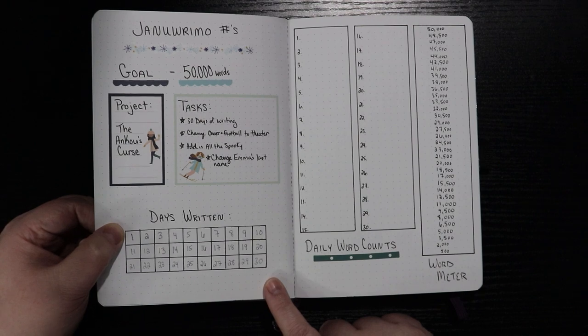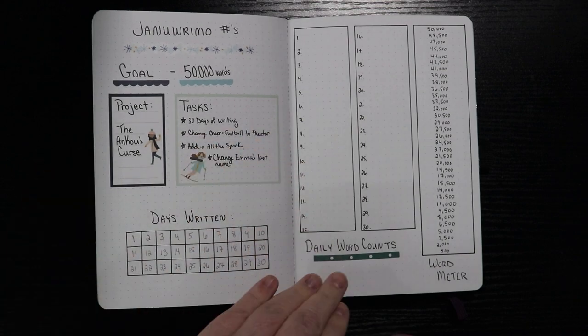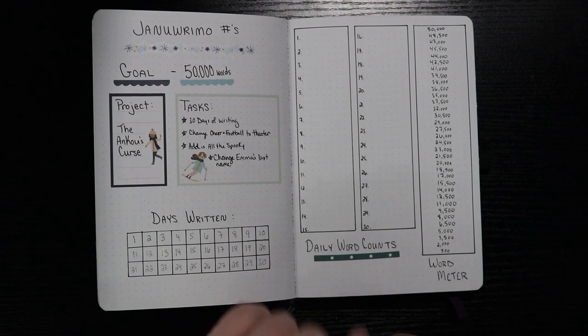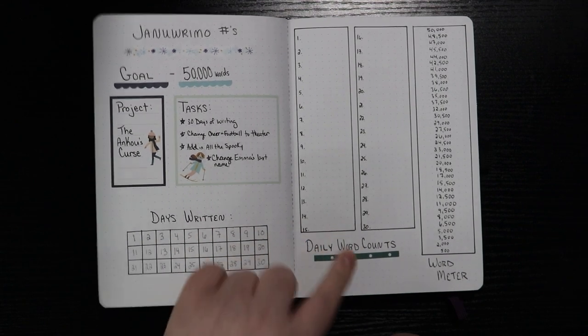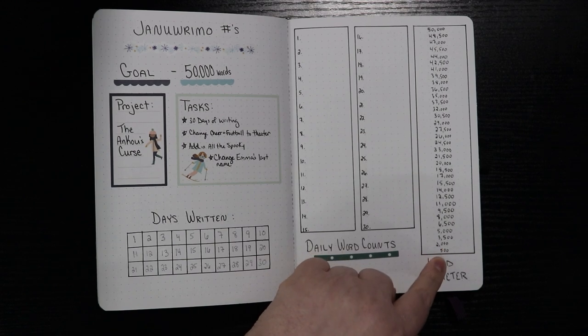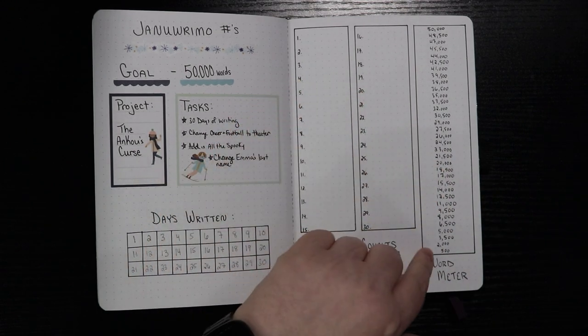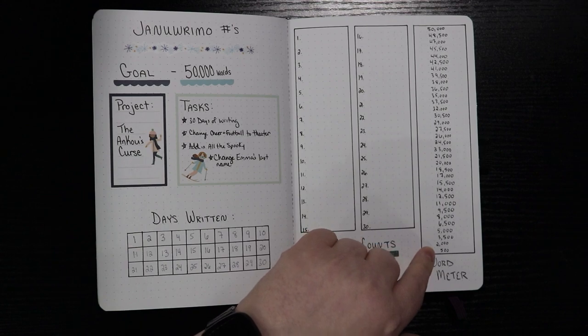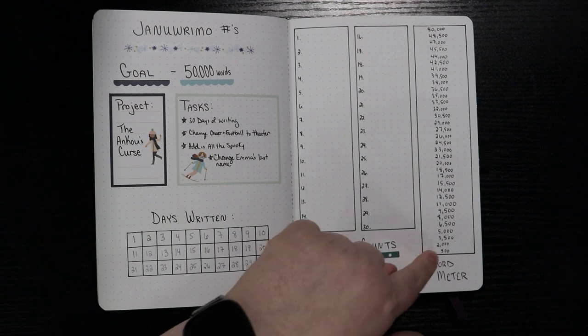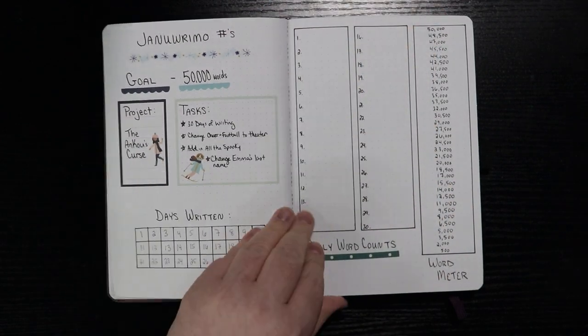I put in a tracker to write how many days I've written. This I consciously decided to do 30 because I didn't like the way that 31 was going to look. And I was like, I can have a day off. So days one through 30, how many days I've written. I did a daily word count. So for 30 days, not 31, but 30 days, I can write down my word count for each day. And then my word meter over here. The first one is only 500 words because that's the only way you can divide it out evenly. Don't come at me. And then each line is 1500 words after that. So I can just color in whenever I hit a point up the meter.